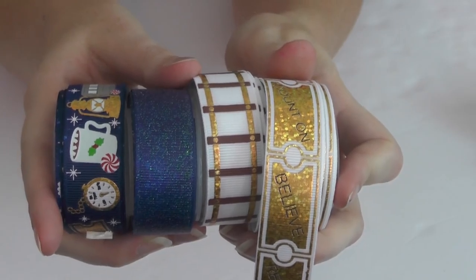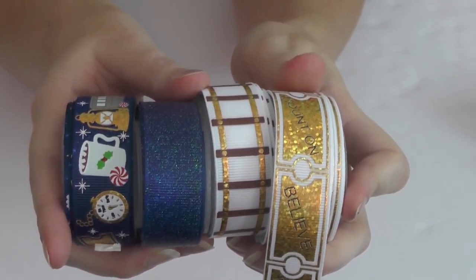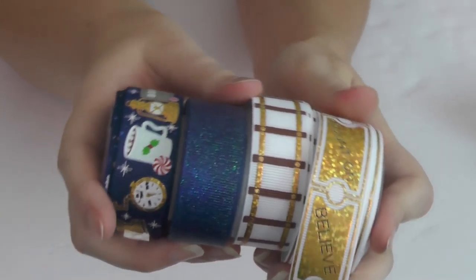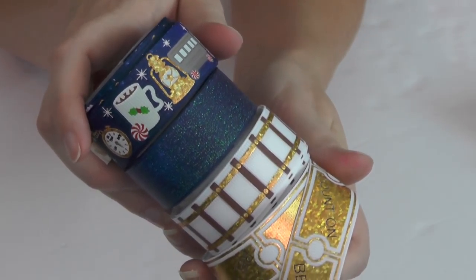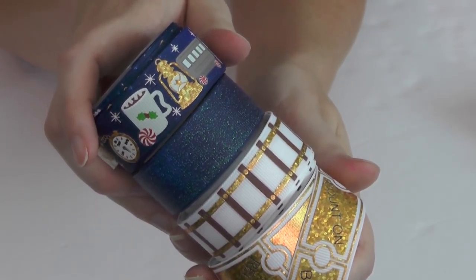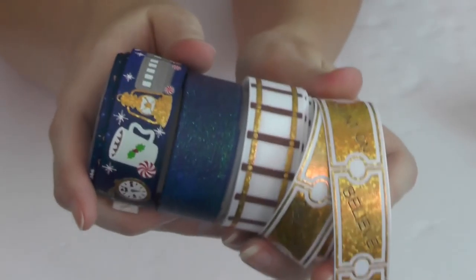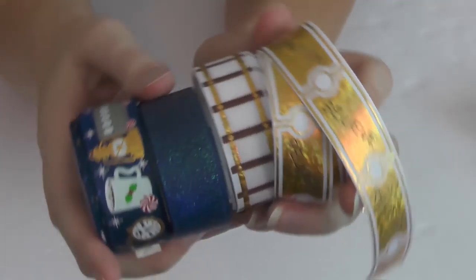Alright, so the ribbon that we are working with is this awesome Polar Express collection from Rollin' in Ribbon. I've shared this here with you guys before. I almost did not want to cut into it. I did not want to cut into it. I wanted to hoard all of this, but Kennedy needed a cute bow.